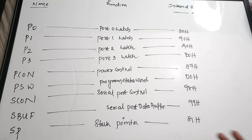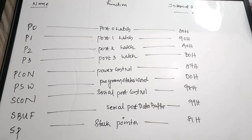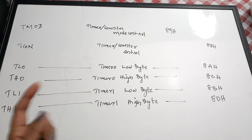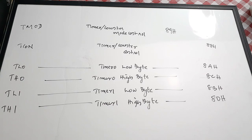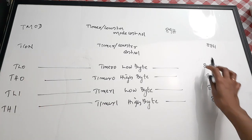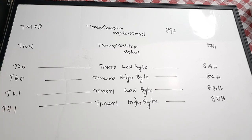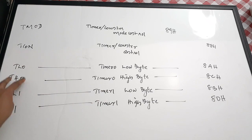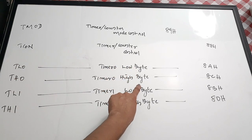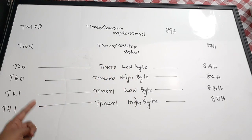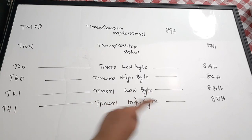The Stack Pointer (SP) register is at address 81H. The TMOD (Timer/Counter Mode Control) register is at 89H, and TCON (Timer/Counter Control) is at 88H. The two 16-bit timers are each organized into two bytes: TL0 and TH0 for Timer 0, and TL1 and TH1 for Timer 1. Their addresses are 8AH, 8CH, 8BH respectively.